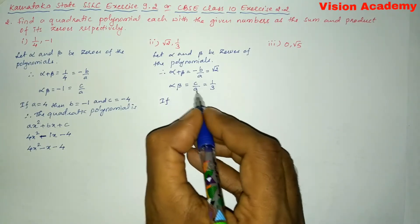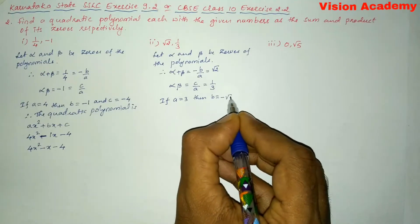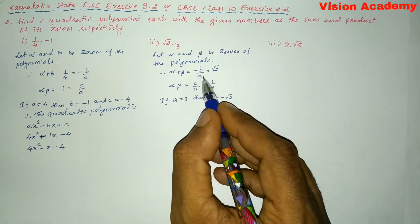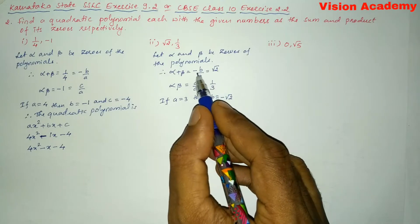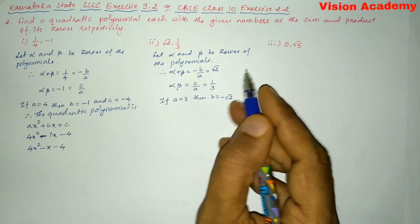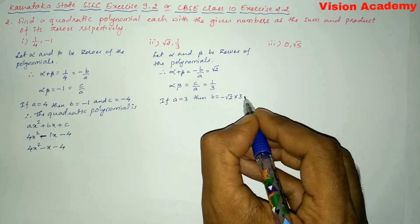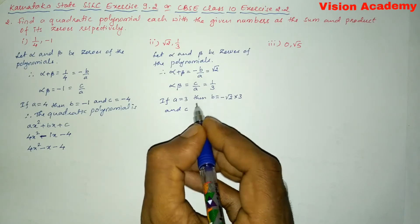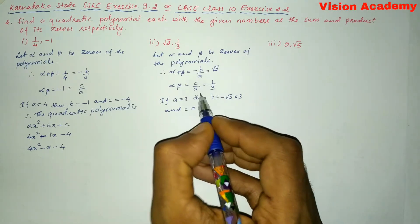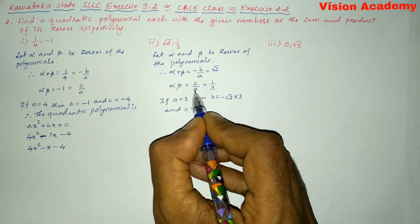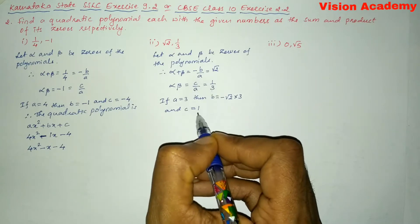You can clearly see that A is equal to three. If A is equal to three, then B is equal to minus three square root of two. Substituting A equal to three: minus B by three equals square root of two, so transforming gives B equal to minus three square root of two. And C: substituting A equal to three, C by three equals one by three, so three cancels and C is equal to one.